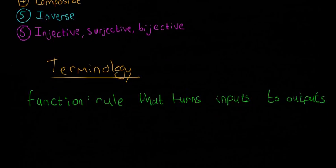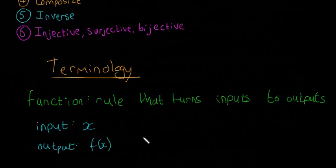So an input - an example of an input would be, input is generally going to be x. And then our outputs, so output is either going to be f(x) or y. They're kind of the same thing, and you might even see this one here written.